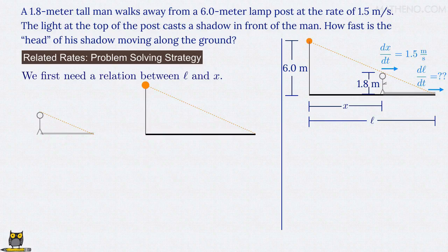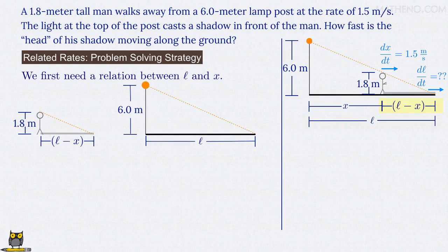To do so, remember that the man's height is 1.8 meters, which we'll add to our small triangle, and the lamppost's height is 6 meters, which goes on the large triangle. The base of the large triangle has length l, while the small triangle has length l minus x.